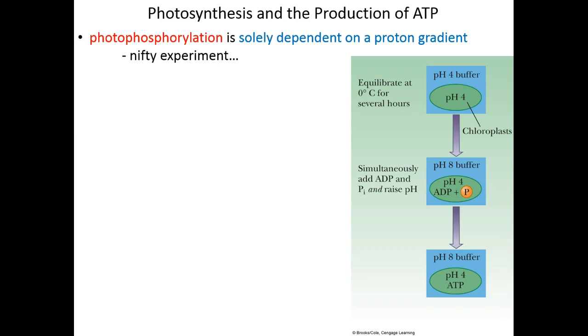The inside, the stroma, the thylakoid discs, everything. And then after that equilibration, they went ahead and took those chloroplasts and put them in a beaker at a pH of 8, a basic solution, proton depleted. So now we had a proton gradient. There were more protons within the chloroplast than outside. They also added to that reaction mix ADP and inorganic phosphate. And in no time at all, they began to monitor that ATP was being produced.